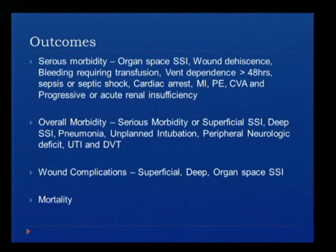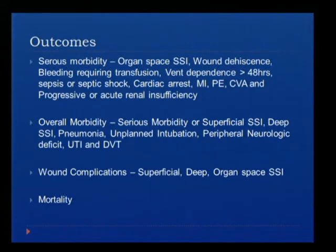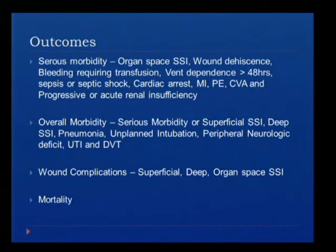We divided outcomes into four categories. First, serious morbidity, which includes organ space infection, wound dehiscence, bleeding requiring transfusion, ventilator dependence more than 48 hours, sepsis and septic shock, cardiac arrest, myocardial infarction, pulmonary embolism, stroke, and progressive or acute renal insufficiency. Second, overall morbidity, which includes serious morbidity or superficial surgical site infection, deep surgical site infection, pneumonia, unplanned intubation, peripheral neurological deficit, UTI, and DVT. Third, wound complications — superficial, deep, and organ space surgical site infections. Fourth, mortality.